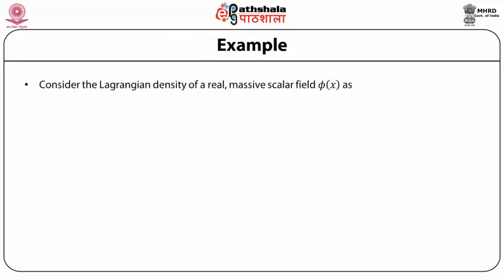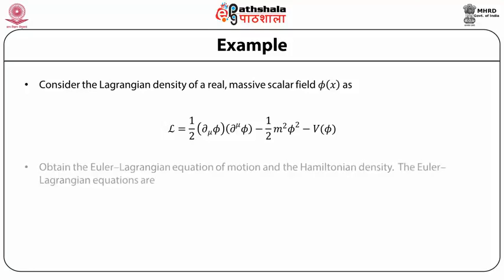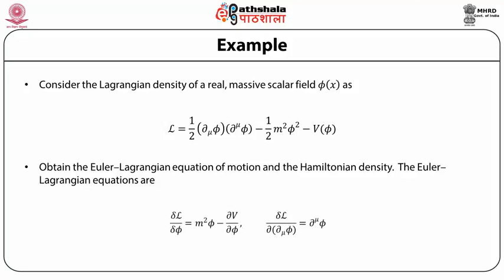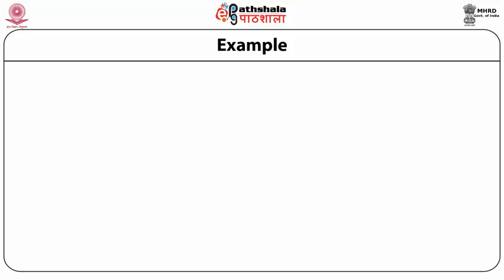Consider the Lagrangian density of a real massive scalar field φ(x): ℒ = (1/2)(∂_μ φ)(∂^μ φ) − (1/2)m²φ² − V(φ). We obtain the Euler-Lagrange equation of motion and the Hamiltonian density. The Euler-Lagrange equations give: δℒ/δφ = −m²φ − ∂V/∂φ and δℒ/δ(∂_μ φ) = ∂^μ φ. The Euler-Lagrange equation is: ∂_μ ∂^μ φ + m²φ + ∂V/∂φ = 0.